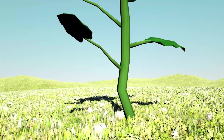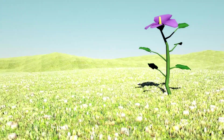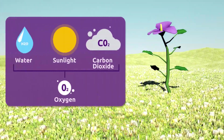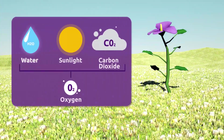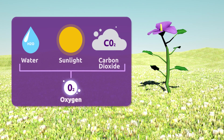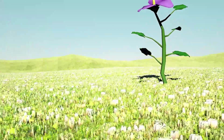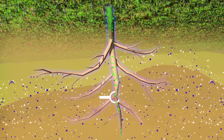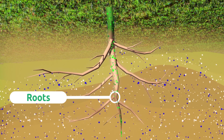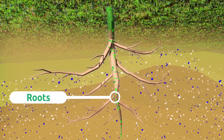During this process, plants transform water, sunlight, and carbon dioxide into oxygen. The photosynthesis cycle starts with plants absorbing water and mineral salts from the soil through their roots.